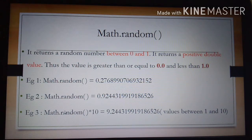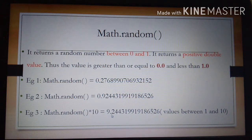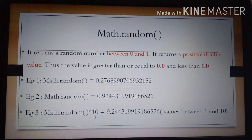Look at the third example: Math.random() * 10. Here, using the second example's answer, its value will become 9.24431 and so on, because we multiplied that answer by 10. That means when you multiply the random function's answer by 10, we will get a value between 1 and 10.